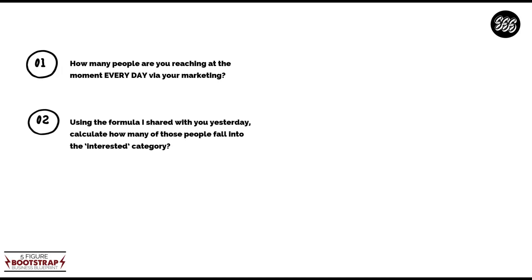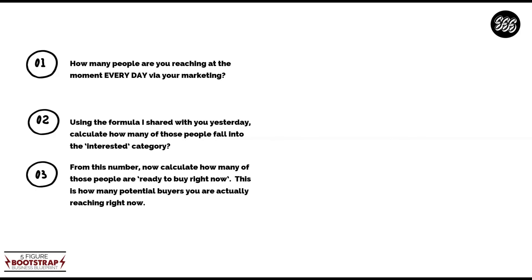Then, using the formula I shared with you yesterday, calculate roughly how many people fall into the interested category. You've got that 47% of interested people, and of course you've got the 3% there that make up that 50%. So you can actually halve the number of people you're getting your stuff in front of every day — halve that number — because that's going to give you a realistic interested category. Then from that number, calculate how many of those people would be ready to buy right now. That's that 3%. This is how many potential buyers you're actually reaching right now.